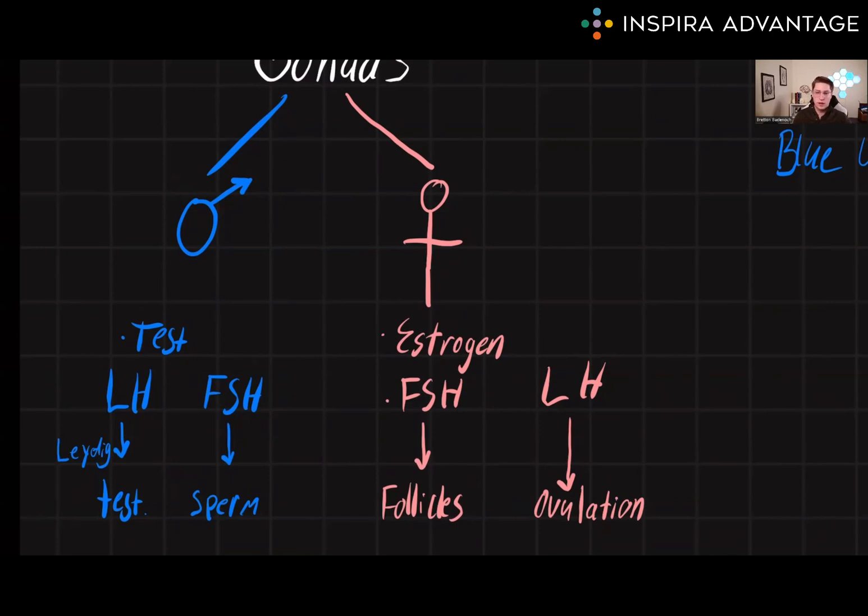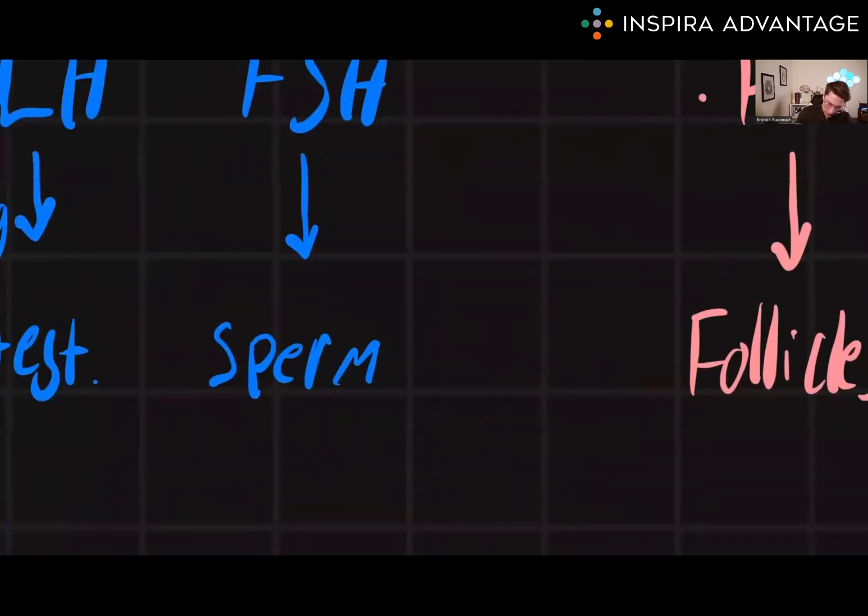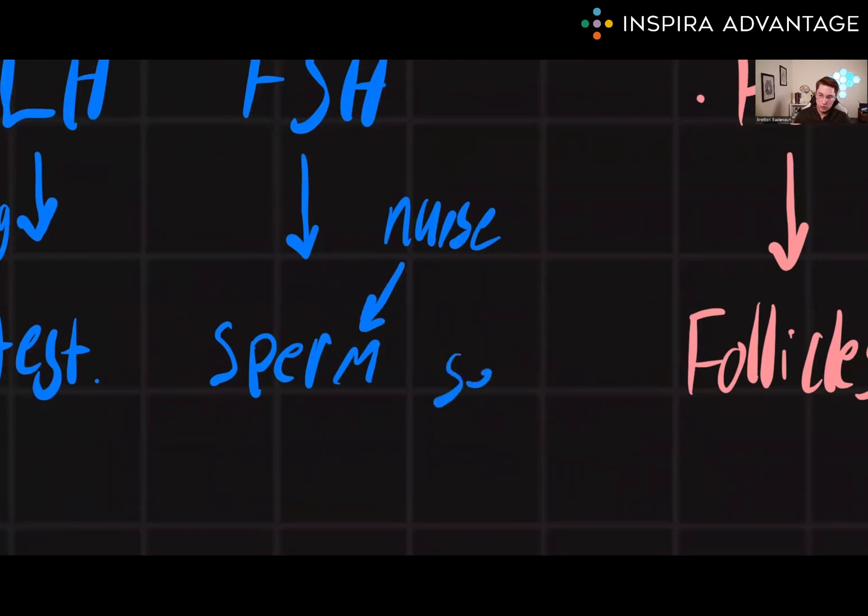In the testes, Sertoli cells are important for sperm production. These cells provide nutrition and support the developing sperm cells, also known as spermatogonia. Nurse cells are also found in the testes and are responsible for the production of androgens, which are important for sperm production. To summarize, nurse cells help sperm development, as do Sertoli cells.